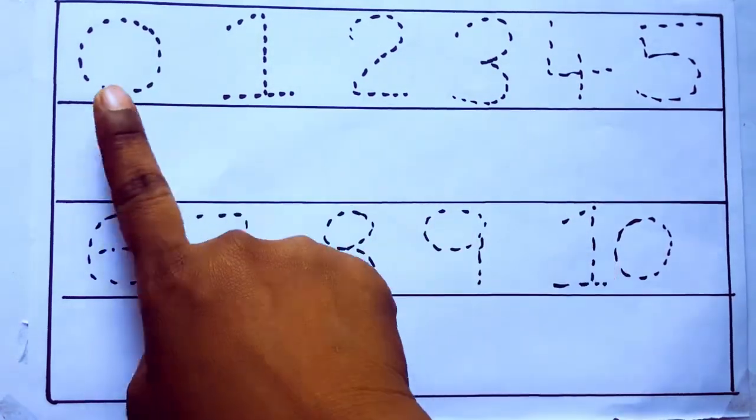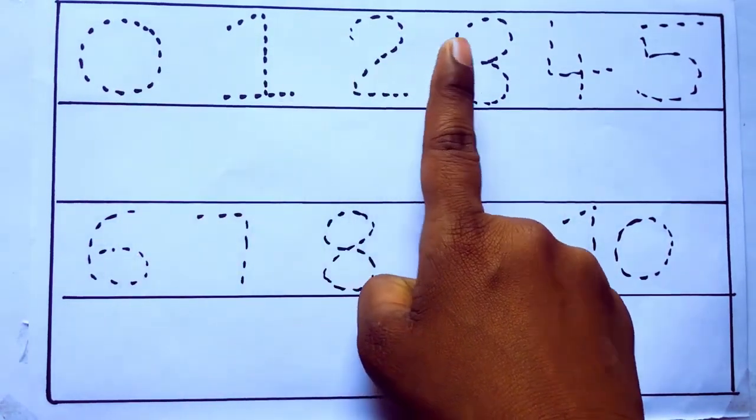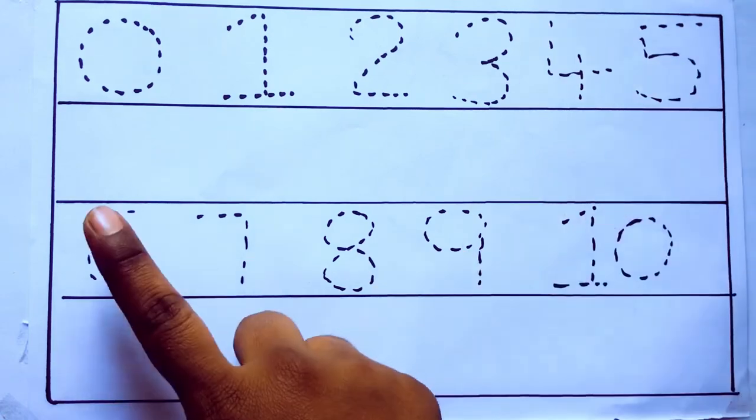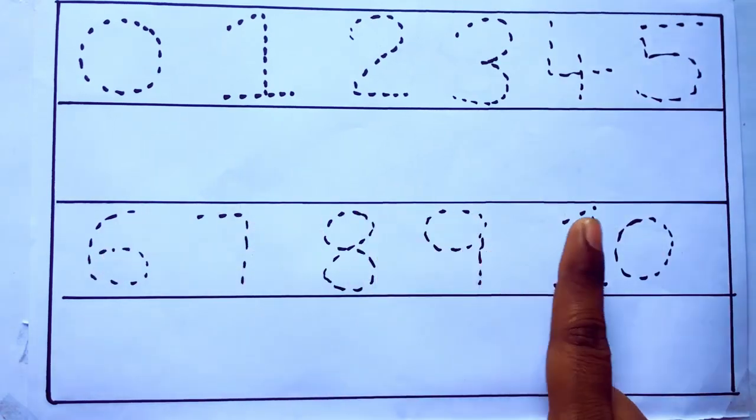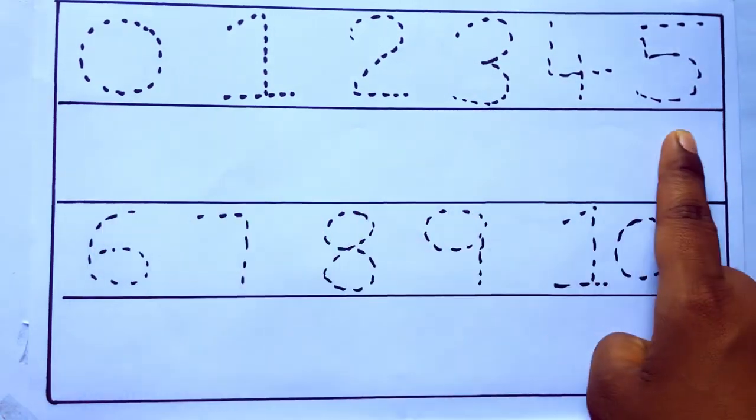0 to 10: 0, 1, 2, 3, 4, 5, 6, 7, 8, 9, 10 and rewriting the numbers.